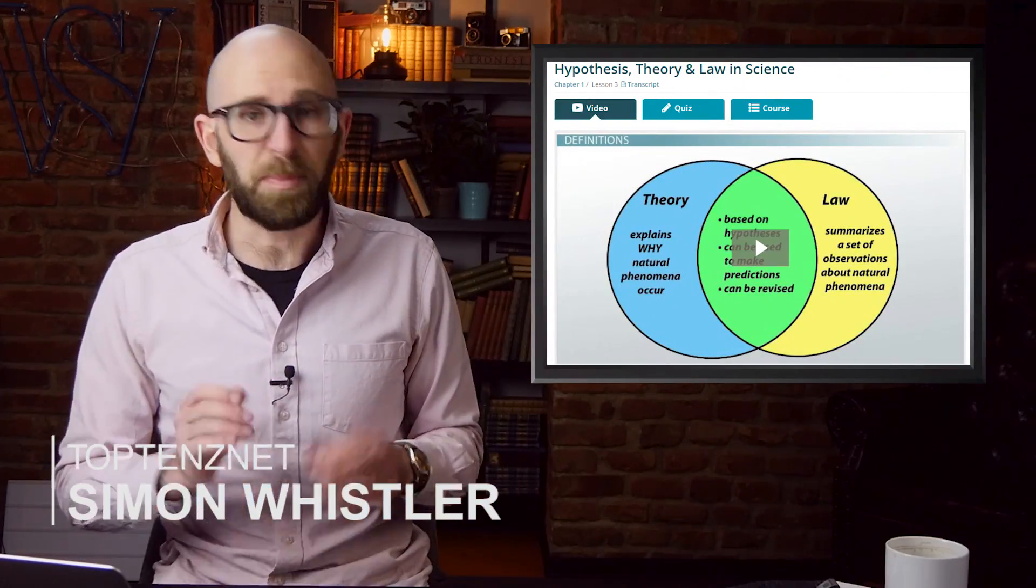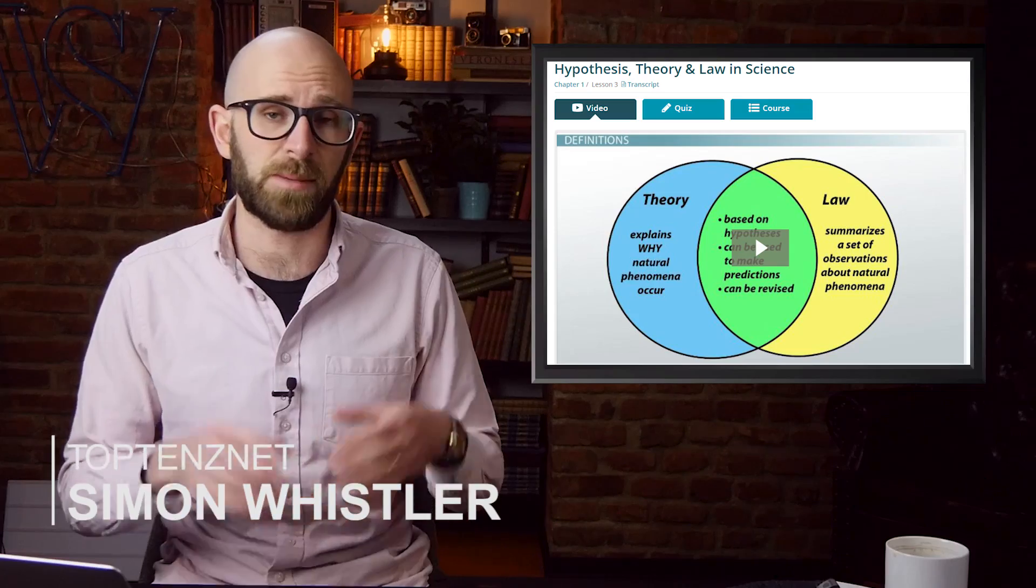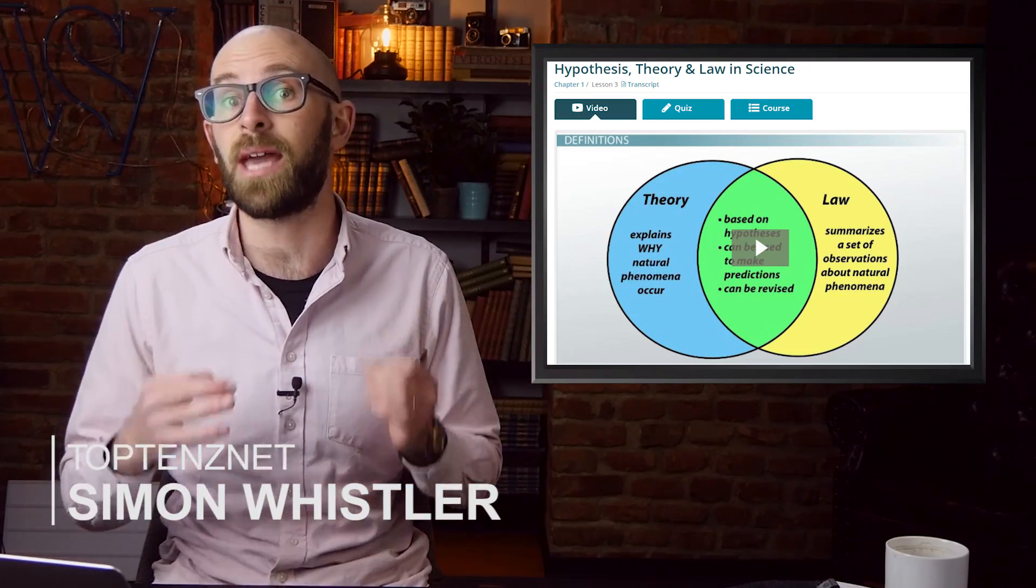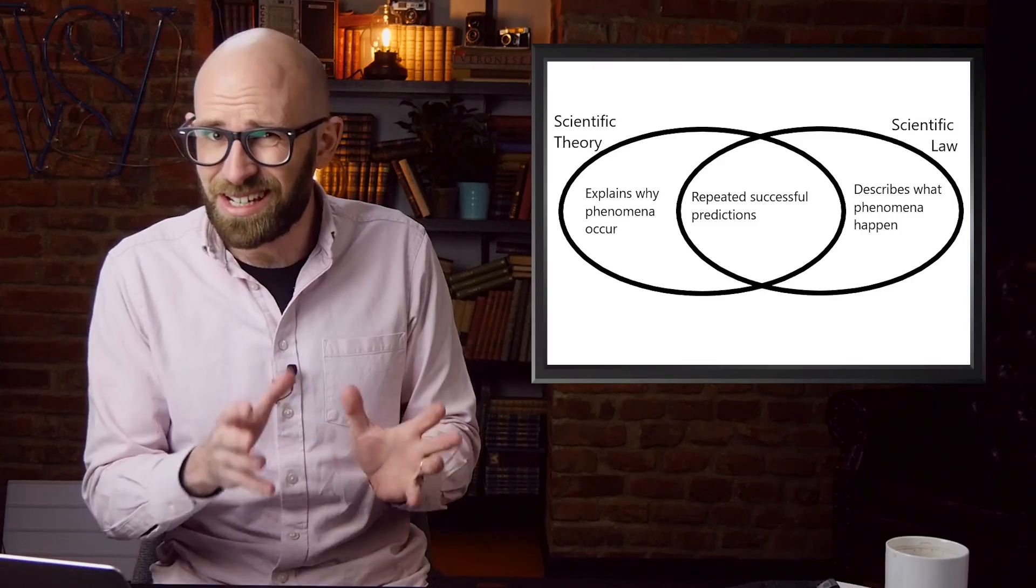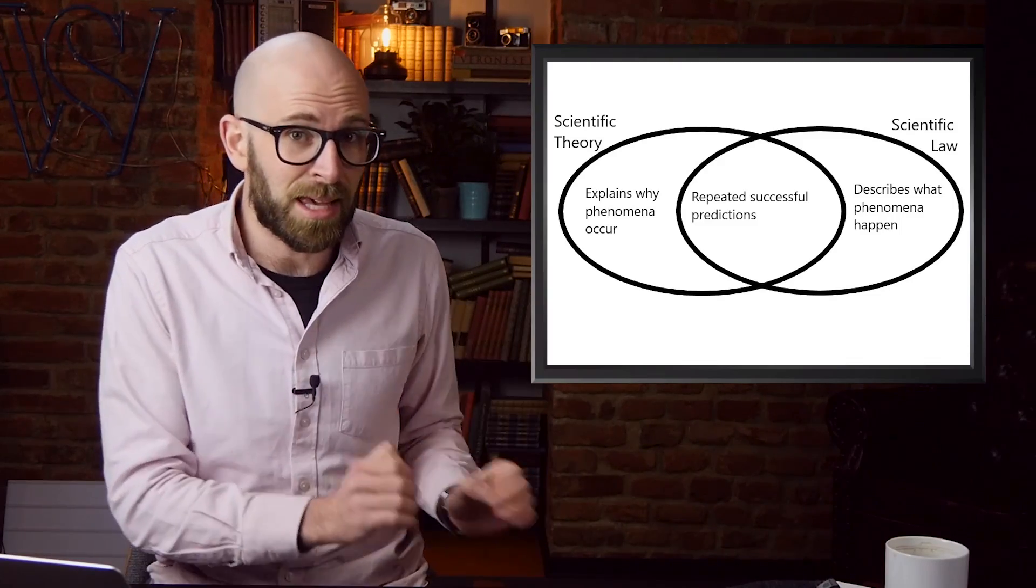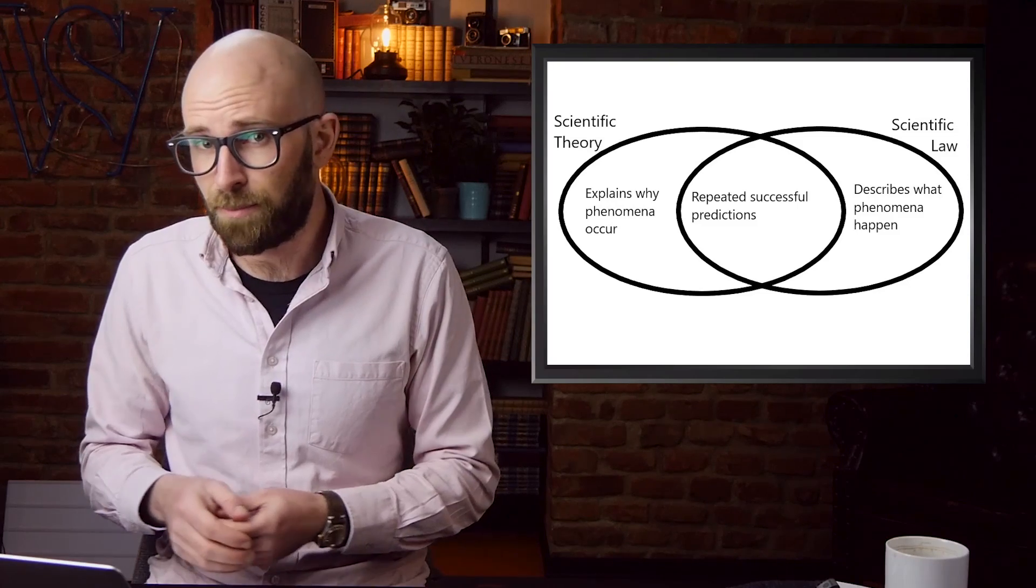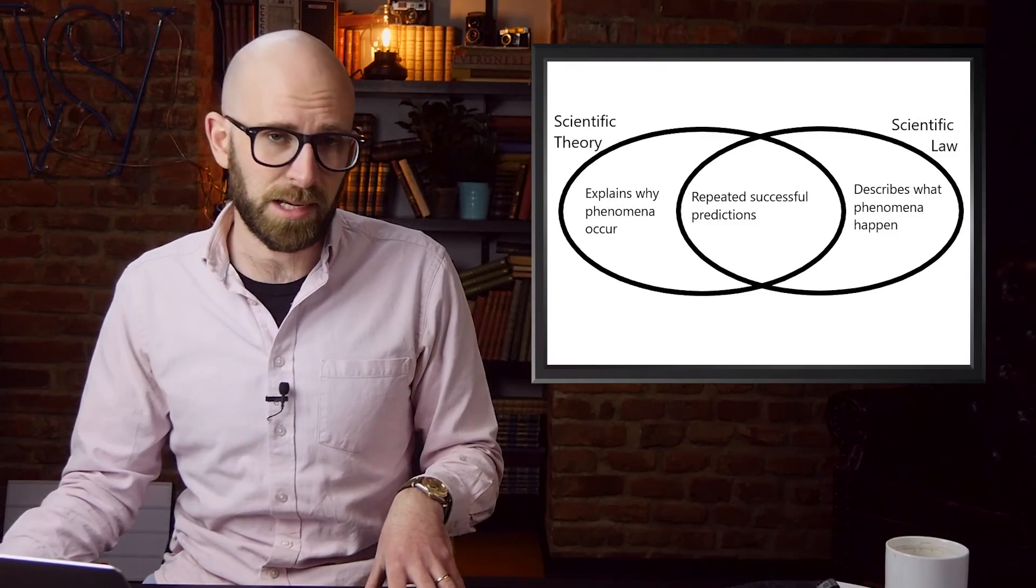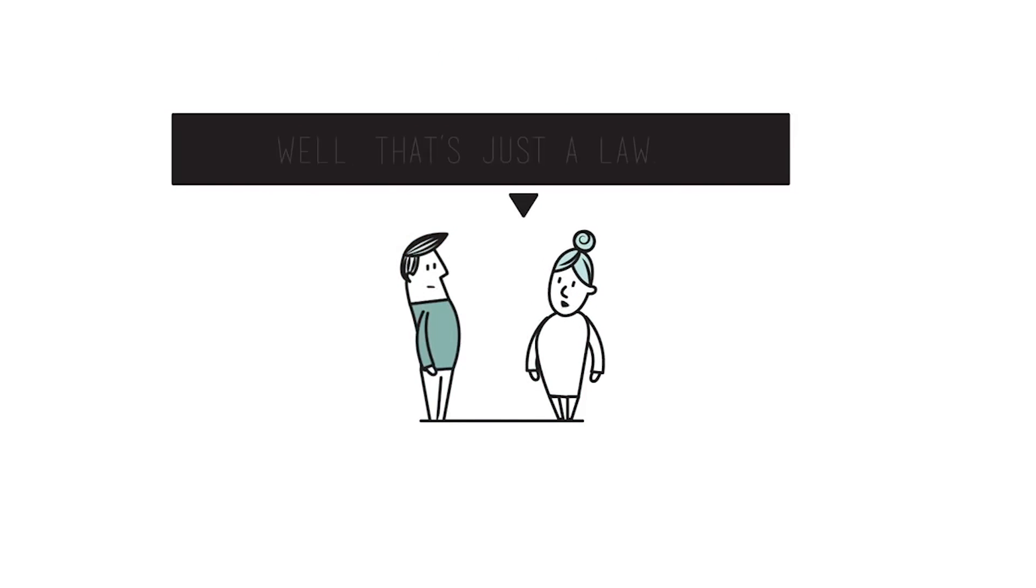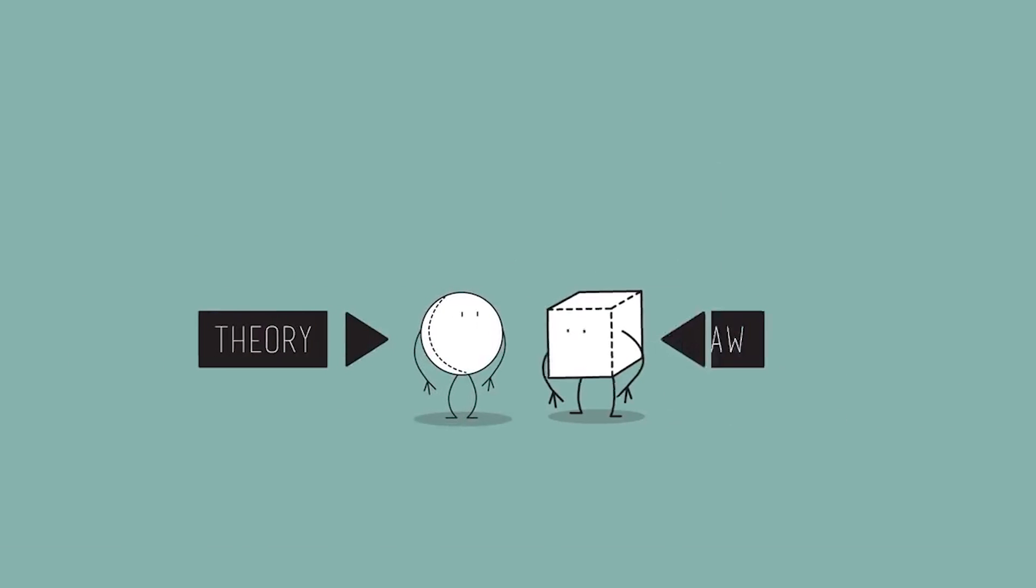People often misunderstand scientific theories, partly because science can be complicated, but also because many people are confused about what a scientific theory actually is. A theory, in science terms, is not just an extremely good educated guess, nor is it expected to ever reach a higher burden of proof. It's a common miscommunication that a scientific theory can ever become a scientific law. They aren't really part of a hierarchy of evidence, but rather separate aspects of understanding and classifying the world around us.